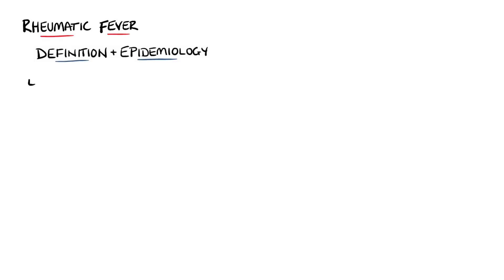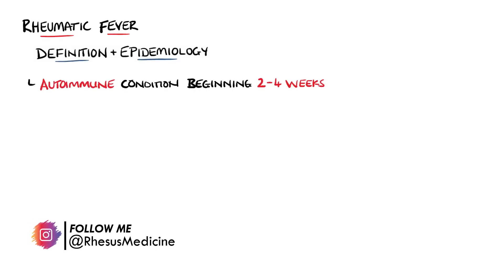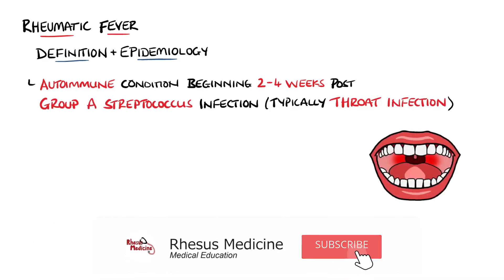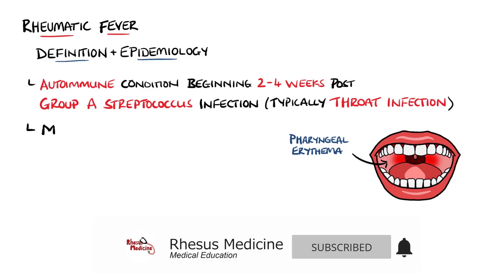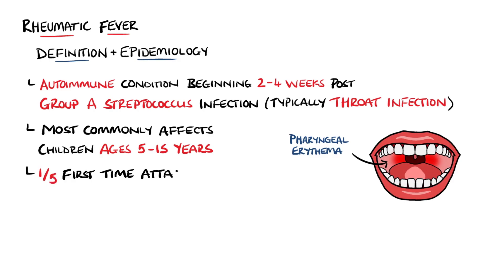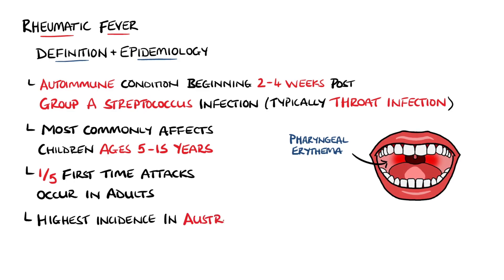Rheumatic fever is an autoimmune condition that typically develops 2-4 weeks following a streptococcal throat infection. It affects primarily children between the ages of 5 and 15, but around 1 in 5 first-time attacks are in adults. The incidence is generally low in developed countries, but in some indigenous populations such as those found in Australia and New Zealand, it is significantly higher.